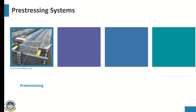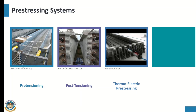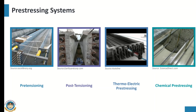The next type is post-tensioning, where the stress is provided with the tendons after the concrete is set. The third type is thermo-electric pre-stressing, in which the stress is provided by heating the tendons, achieved by passing an electric current through high tensile wires. The fourth method is chemical pre-stressing, also known as self-stressing, made possible by the use of expanding cements.